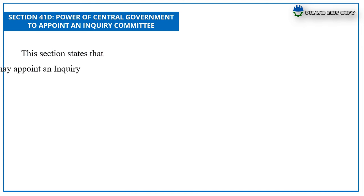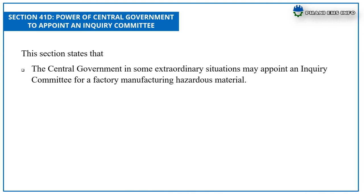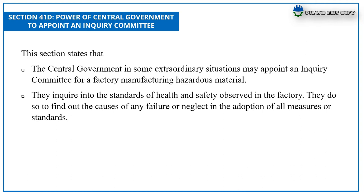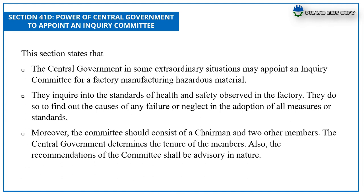Section 41D: Power of Central Government to Appoint an Enquiry Committee. This section states that the central government, in some extraordinary situations, may appoint an inquiry committee for a factory manufacturing or using hazardous material. They inquire into the standards of health and safety observed in the factory and find out the causes of any failure or neglect in the adoption of all measures or standards. Moreover, the committee should consist of a chairman and two other members. The central government determines the tenure of the members. Also, the recommendations of the committee shall be advisory in nature.